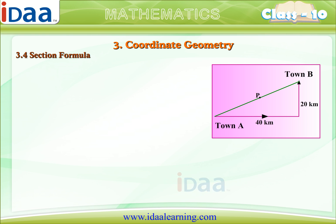one can reach town B from town A by moving 40 km towards east and then 20 km towards north. A telephone company wants to raise a relay tower at P which divides a line joining A and B in the ratio 2 is to 3 internally.